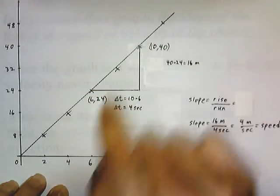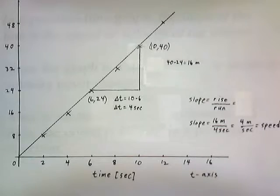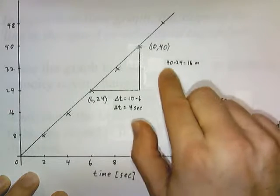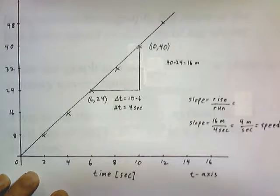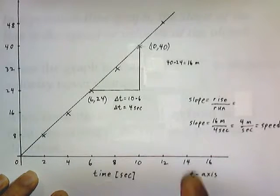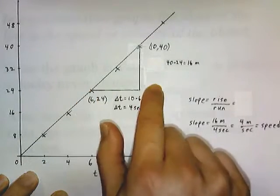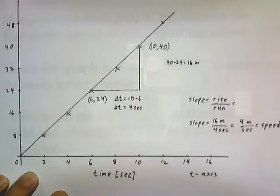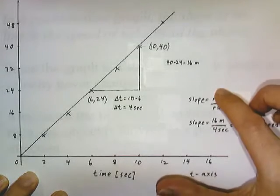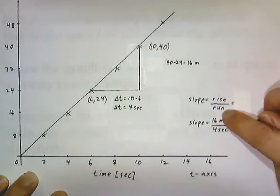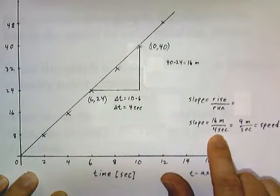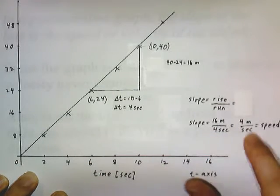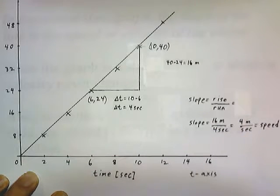From these two points, we can calculate the slope. The vertical change, or rise, is 40 minus 24, which equals 16. The horizontal change, or run, is 10 minus 6, which gives us 4 seconds. So the slope of the line is rise over run: 16 meters divided by 4 seconds gives us 4 meters per second.